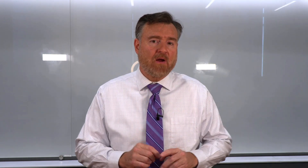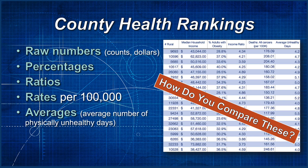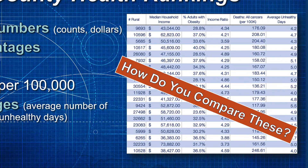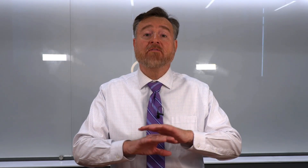Here is the point I want to make with this lecture. Given this dataset, how would you compare these values? How can you compare raw numbers to percentages to rates per 100,000 to ratios or averages? The answer is that we are going to convert all of these disparate measures into a comparable format called a z-score distribution.